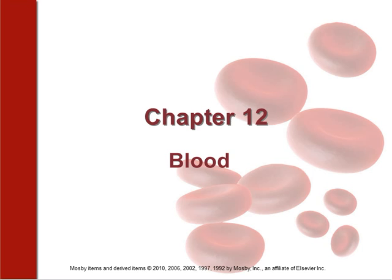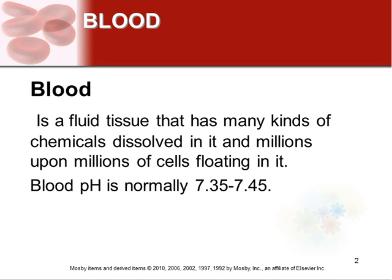We're going to do chapter 12: blood. Blood is a fluid tissue that has many kinds of chemicals dissolved in it and millions of cells floating around in it. Blood itself has a very specific pH, which is very important to maintain homeostasis. That pH range is 7.35 to 7.45. If it gets outside of this range, your body won't function very well — and if someone is acidotic or alkalotic, it can make them really sick and can actually kill them.